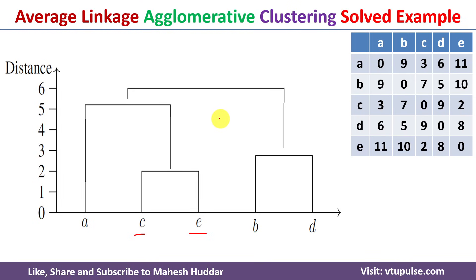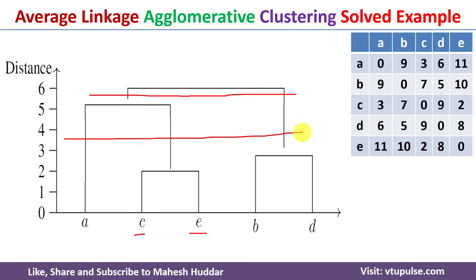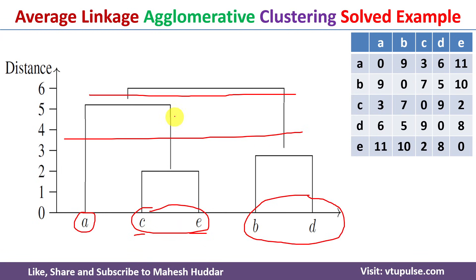Based on the required number of clusters, we cut the dendrogram at different levels. If we want two clusters, cutting here gives {A, C, E} and {B, D}. If we want three clusters, cutting at a different level gives {A}, {C, E}, and {B, D}, and so on. In this video I discussed how to apply average linkage agglomerative clustering to group data points into clusters and how to draw the dendrogram.